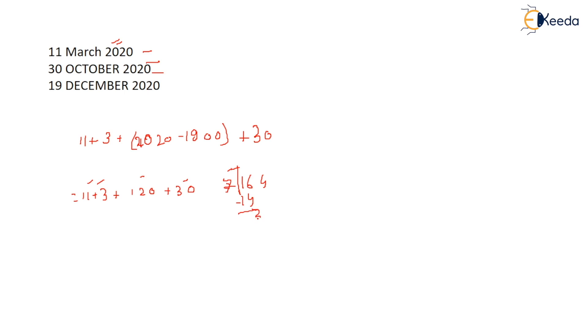153 plus 11 is 164. 164 divided by 7, so 14, 153, 34. That means 28, 0, 6. 0, 6 is code for what? Saturday. So on this day this year the day will be Saturday.